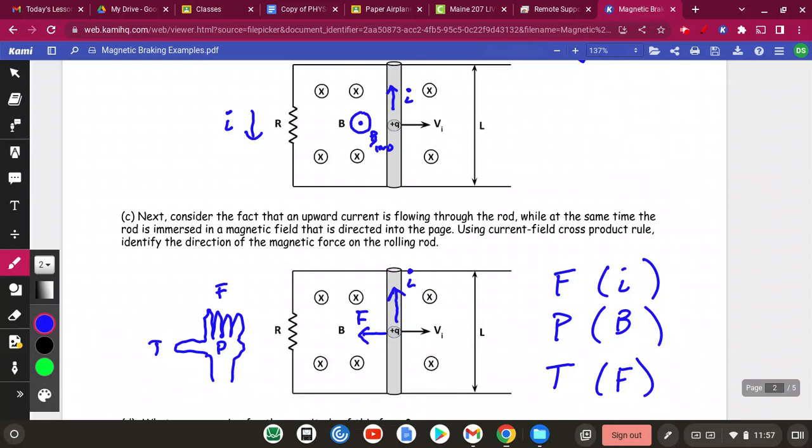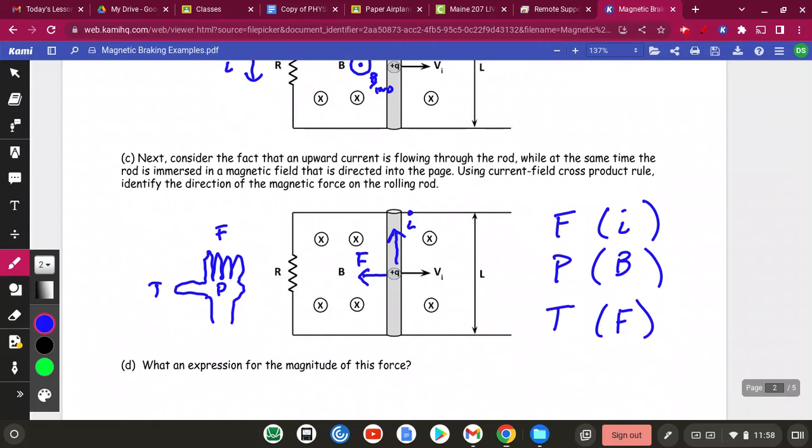But that force, okay, so that's—wouldn't it be weird if it was otherwise? Wouldn't it be weird if that rod was moving and all of a sudden the magnetic field was like, go faster, go faster, go faster. Where would the energy come from? Where would the energy come from, right? A magnetic field doesn't just have energy in it to give away. You can't get energy from nothing. So the fact that the rod is slowing down is good because you couldn't make it speed up.